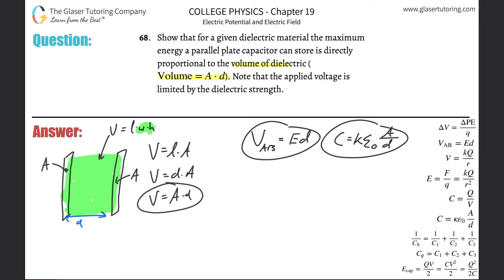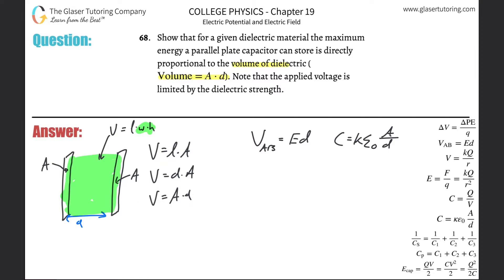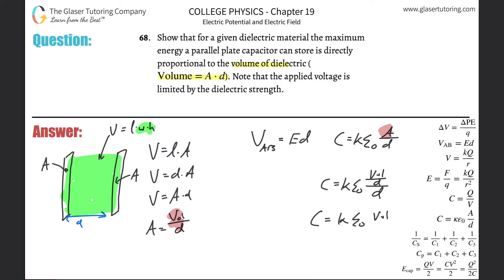We need to look at these equations and do a series of substitutions. First, take the volume equation and solve for A, so A equals volume divided by d. Now plug that in for A in the capacitance equation: C equals k times ε₀ times volume divided by d, then divided by d again — which gives C equals k times ε₀ times volume divided by d squared.